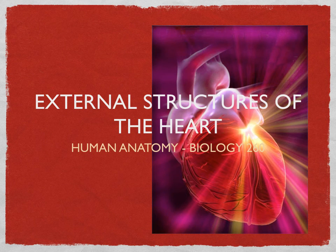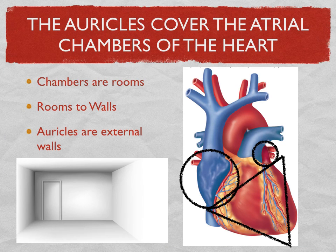Some basic things that you need are the external structures of the heart. The first thing is that we need to identify what are called the auricles of the heart. This is probably the first thing we're going to do. When you get these sheep hearts, the first thing we're going to do is identify the auricles.